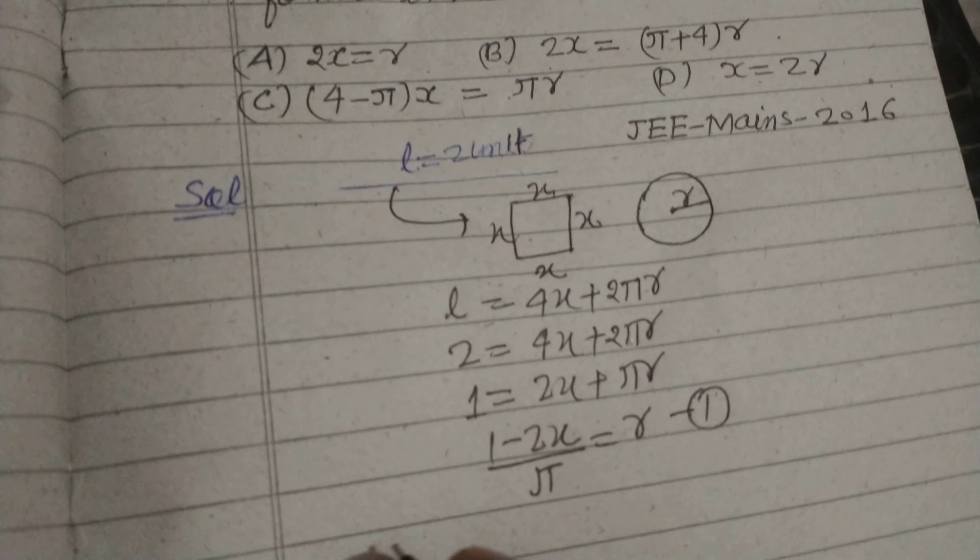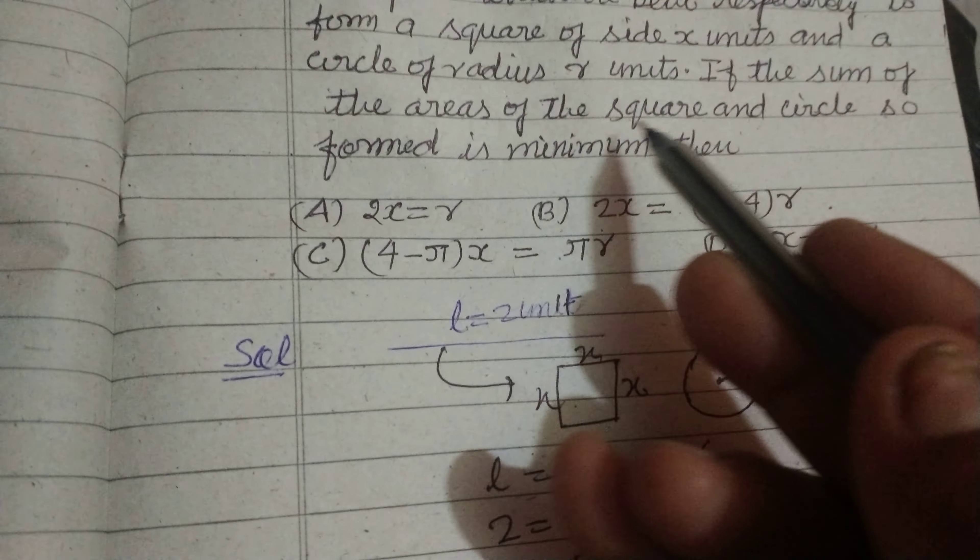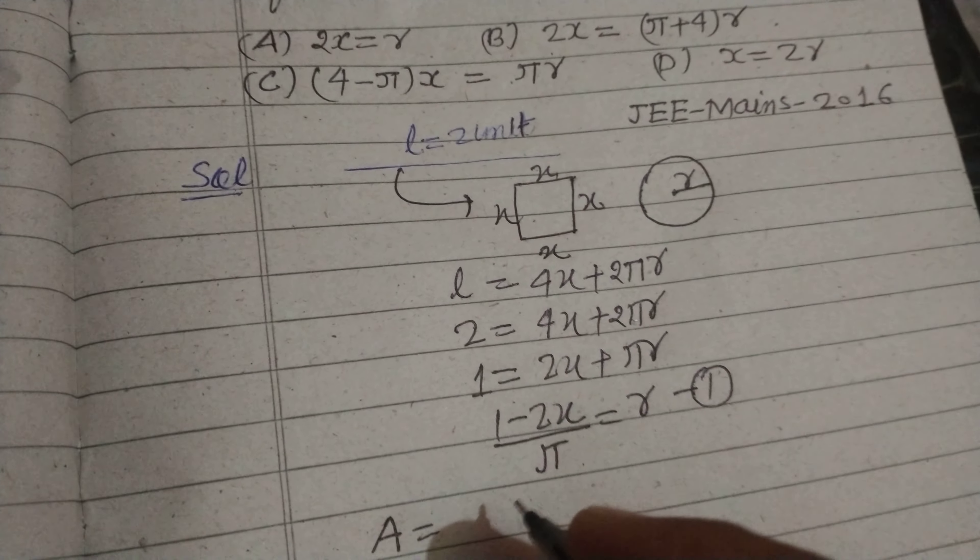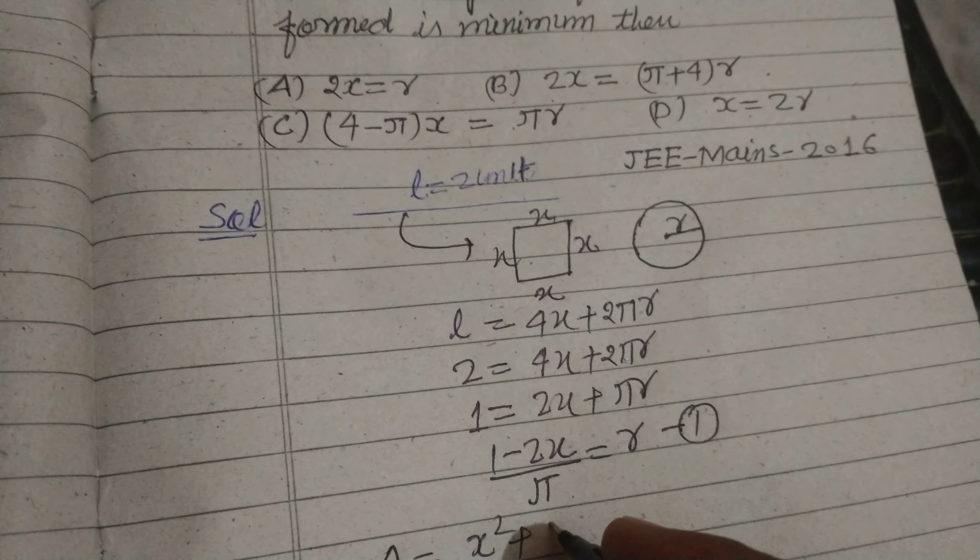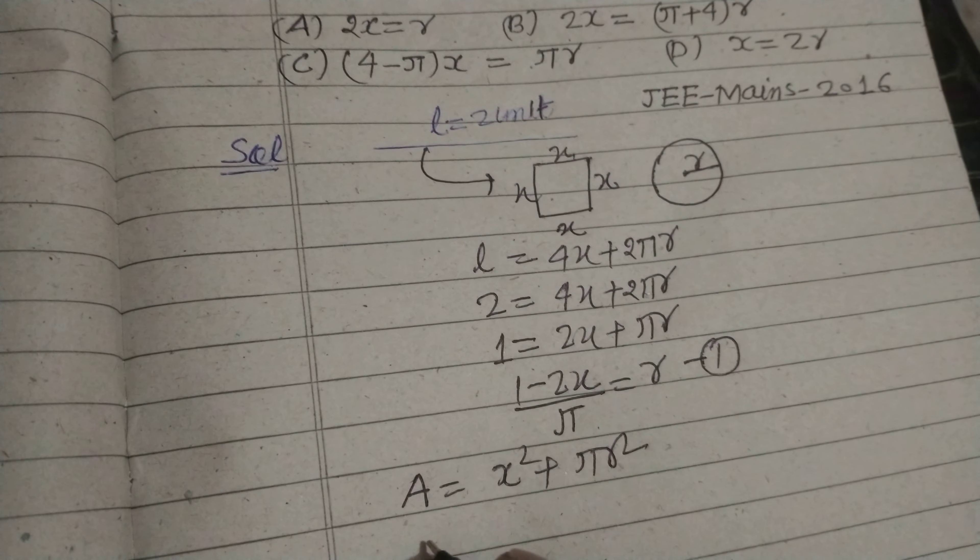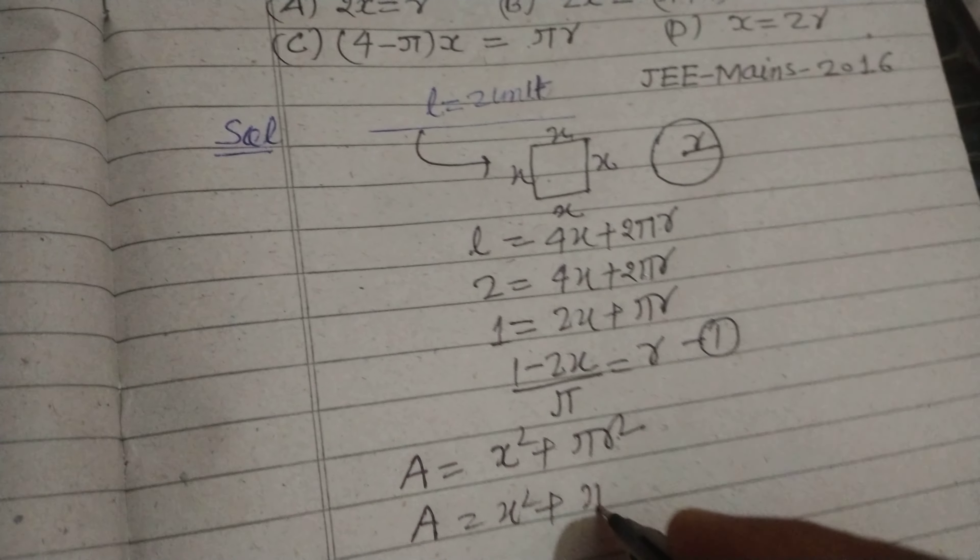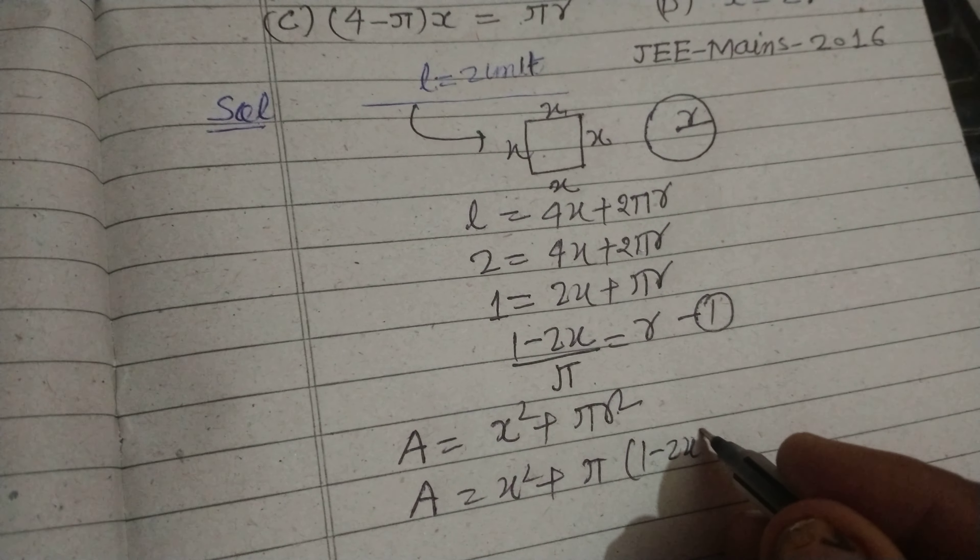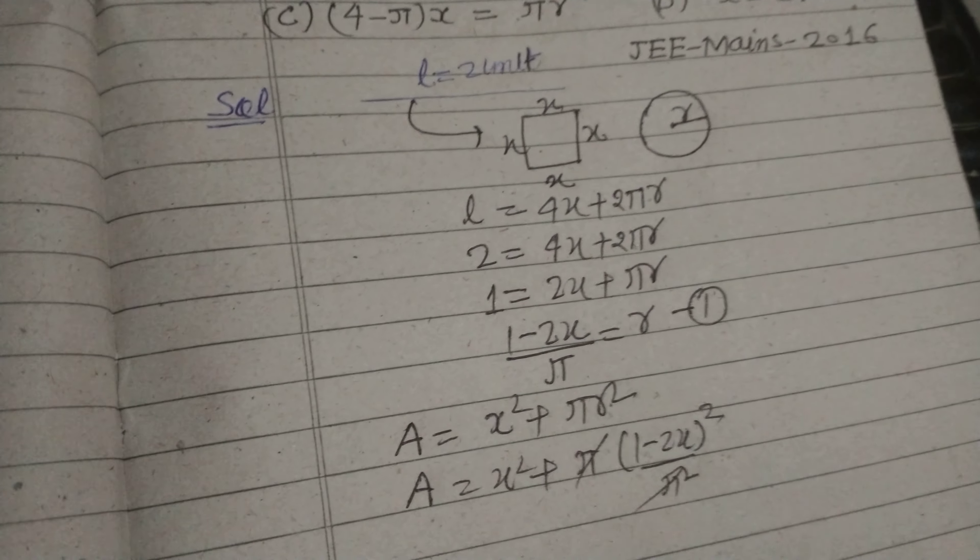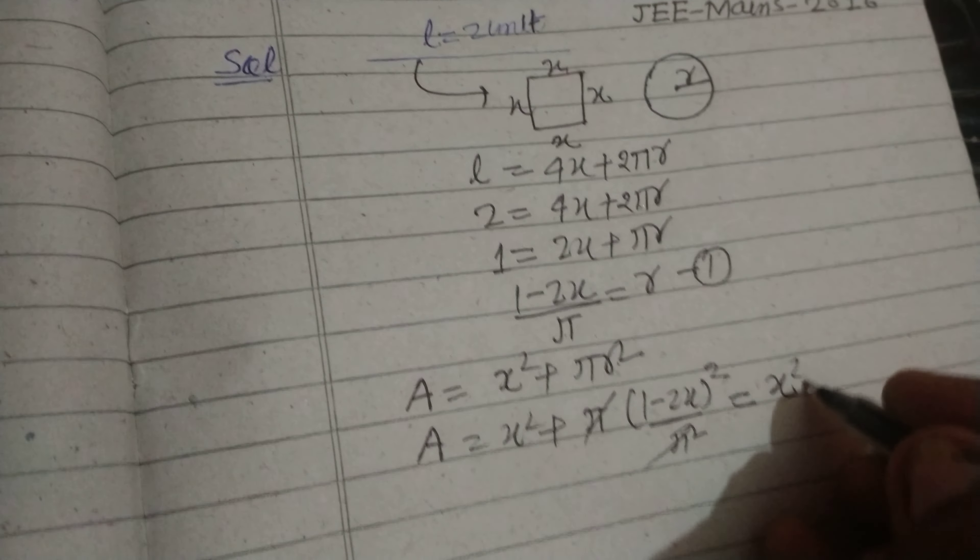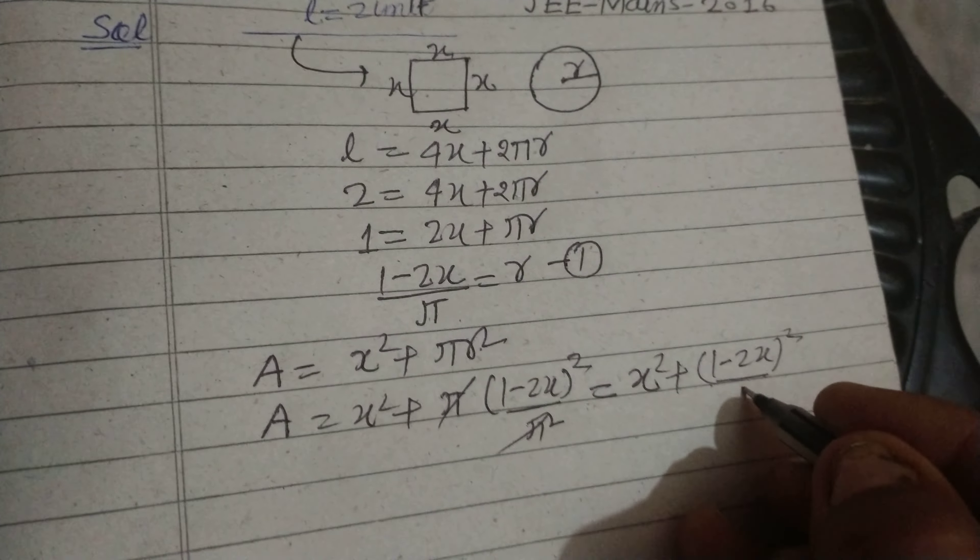Now it is given that the sum of the area of the square and the circle so formed is minimum. So sum of the areas: square which is x² and circle πr². So A = x² plus we put the value of r from here: π(1 - 2x)² / π². So this π cancels out. We get x² + (1 - 2x)² / π.